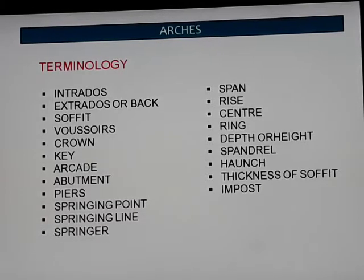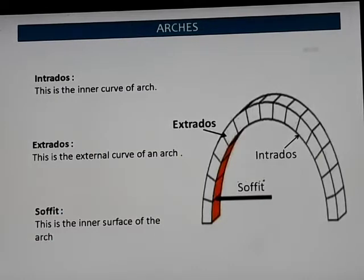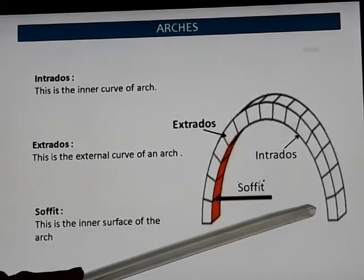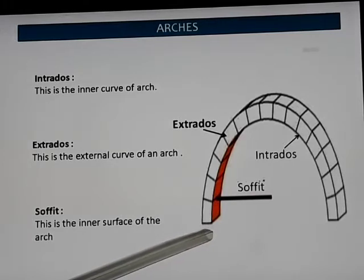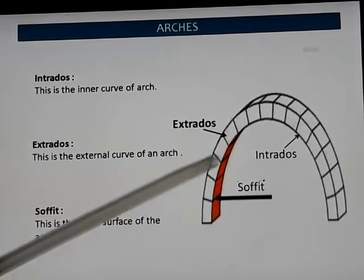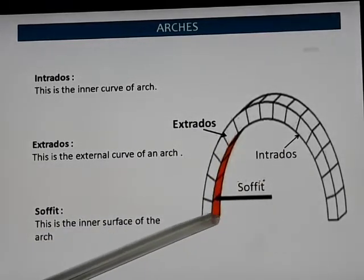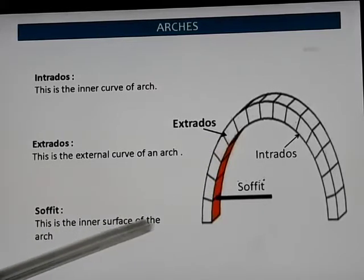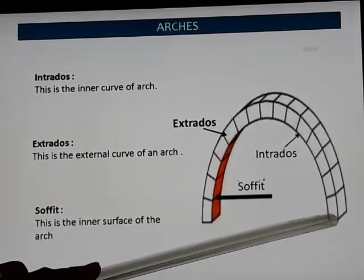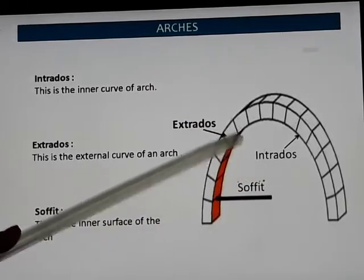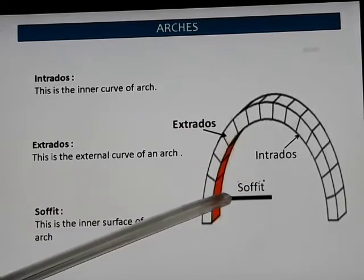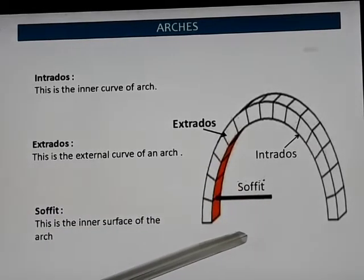Coming to the very first term — intrados is the inner curve of the arch. Extrados, marked here, is the outer curve. So extrados and intrados are the curves. The soffit is the inner surface of the arch.